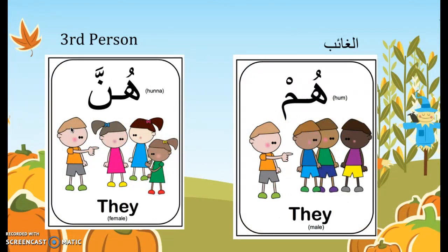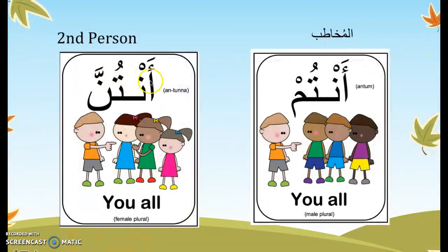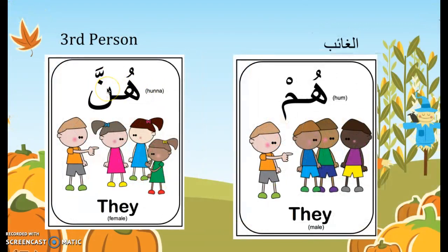For third person, we already did هو and هي — he and she. To say 'they' or 'them,' we say هم. Remember, third person or غائب means they're not here — you're talking about them, not to them. For a group of specifically females, we say هن — again that نون with shadda. But for male or mixed groups, we use هم. For this class, we'll focus on هم.